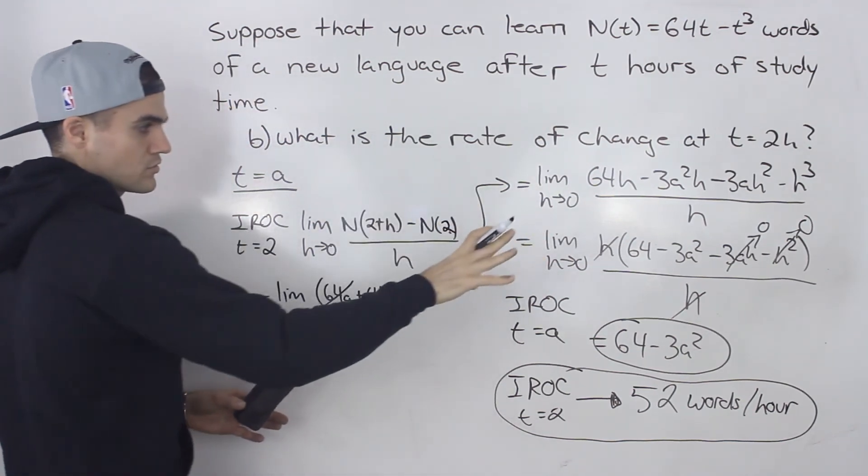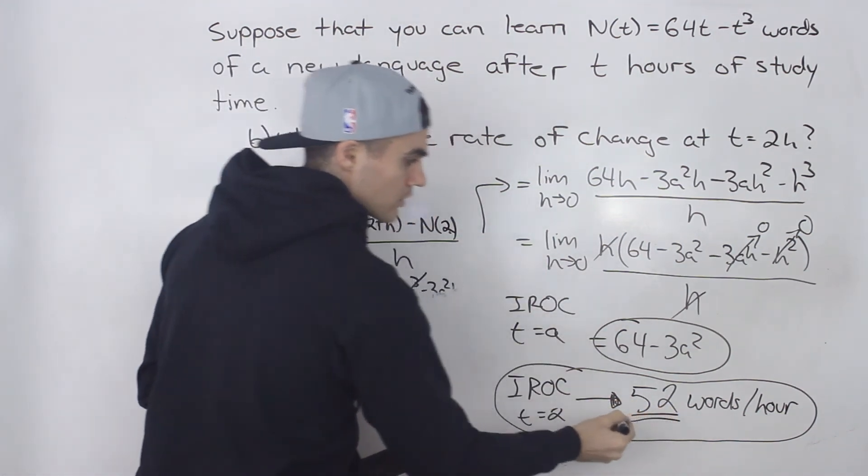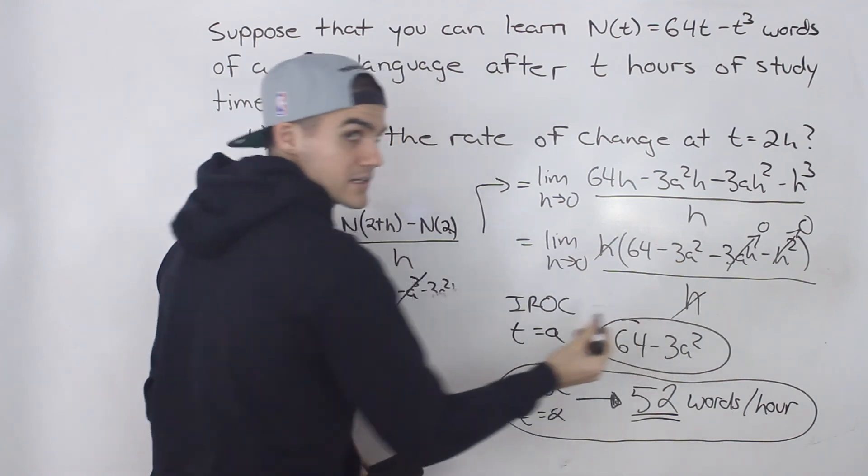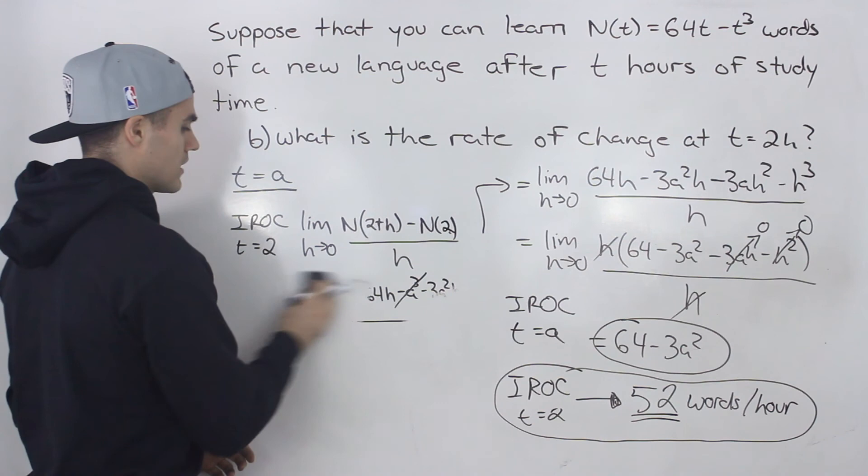You follow the exact same process, but when you get to this last step, you're just going to end up with this number, you're not going to have this general expression here, you're just going to end up with 52. You can even try it on your own if you like.